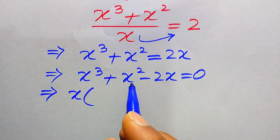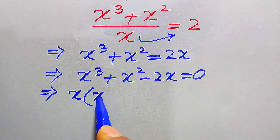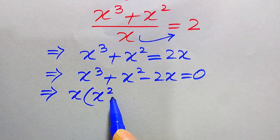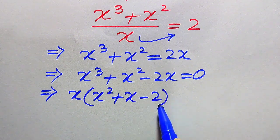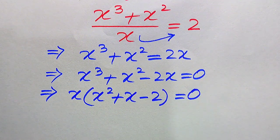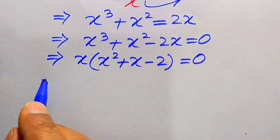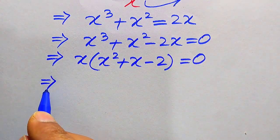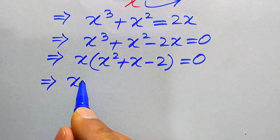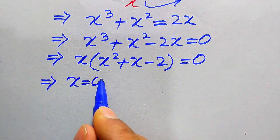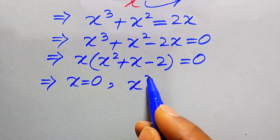When we take x as common, we get the remaining values as x² + x − 2, and this whole equation equals 0. Now in the next step we divide this equation into two cases. The first case is x equals 0, and the second case is x² + x − 2 equals 0.